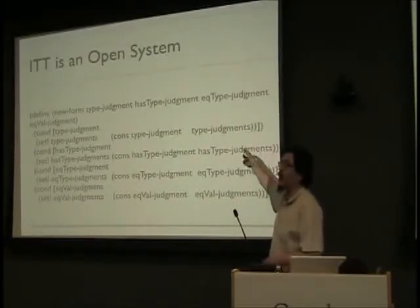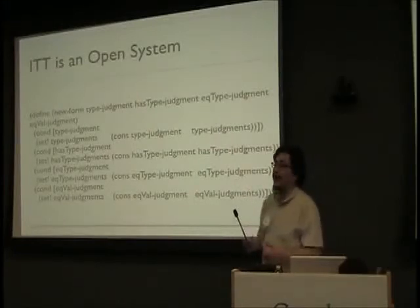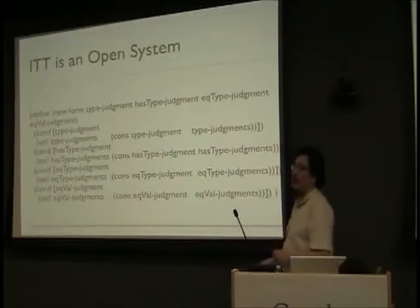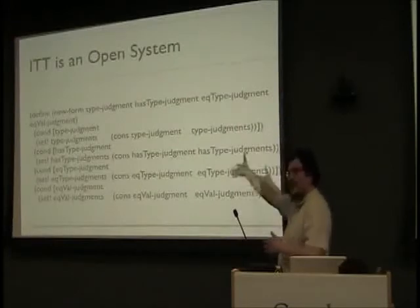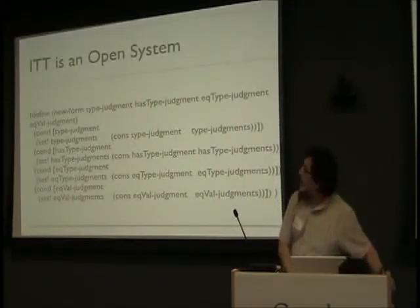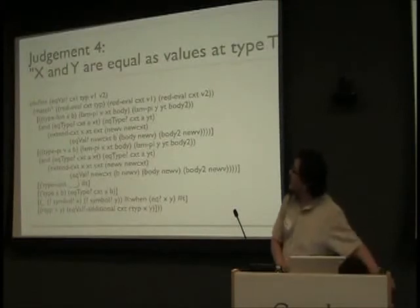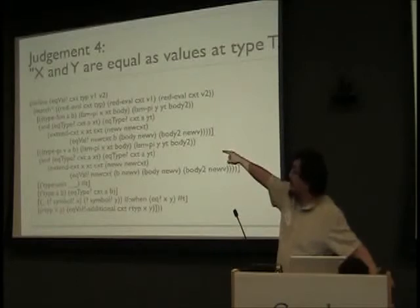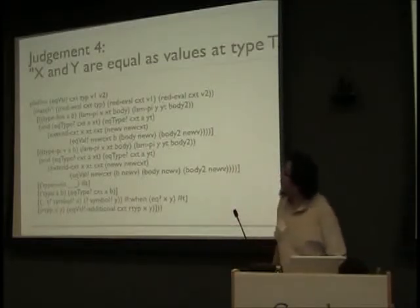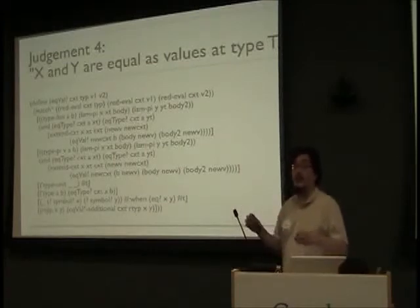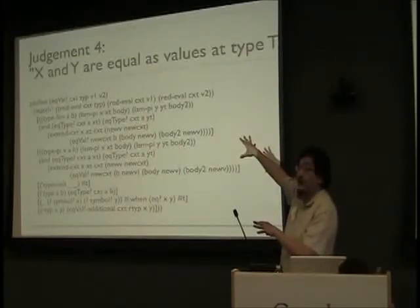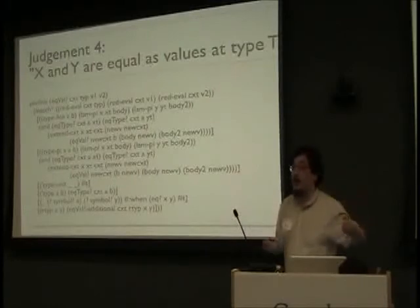Now we're going to write another macro, and it'll wrap up because we have four judgments. Any time I want to introduce a new type, just so I don't forget any of the judgments, I'm going to have a macro that takes the way to extend each of the four judgments all at once. To introduce a new type is to give all four of these judgments simultaneously. Once you introduce the equality type, you'll see that EQVal — once you introduce equality of values — that relies on equality of types, and equality of types relies on well-formedness of types. You have dependencies among all these four judgments.